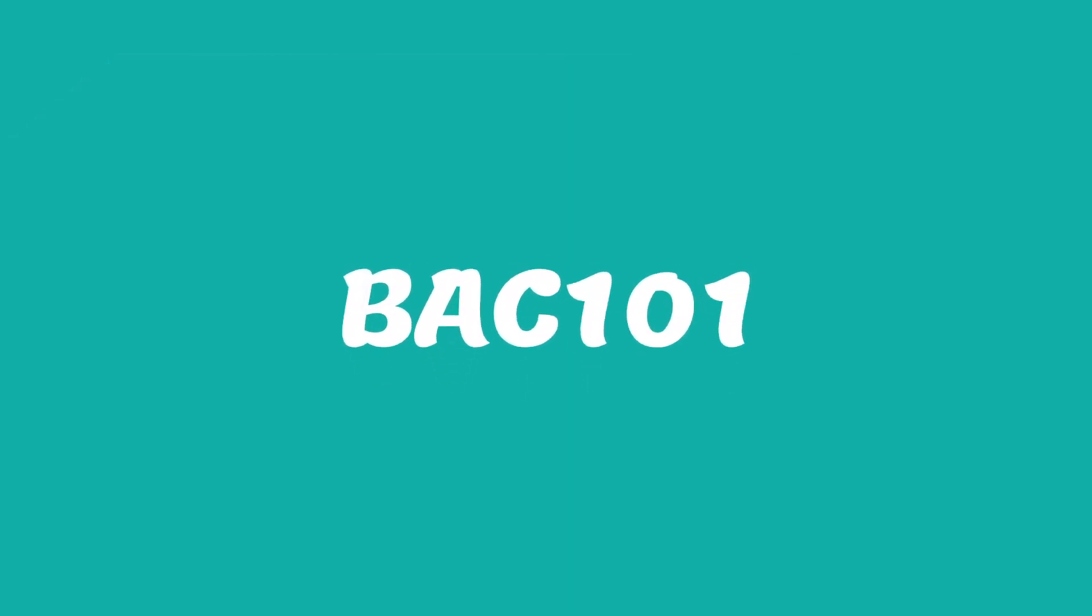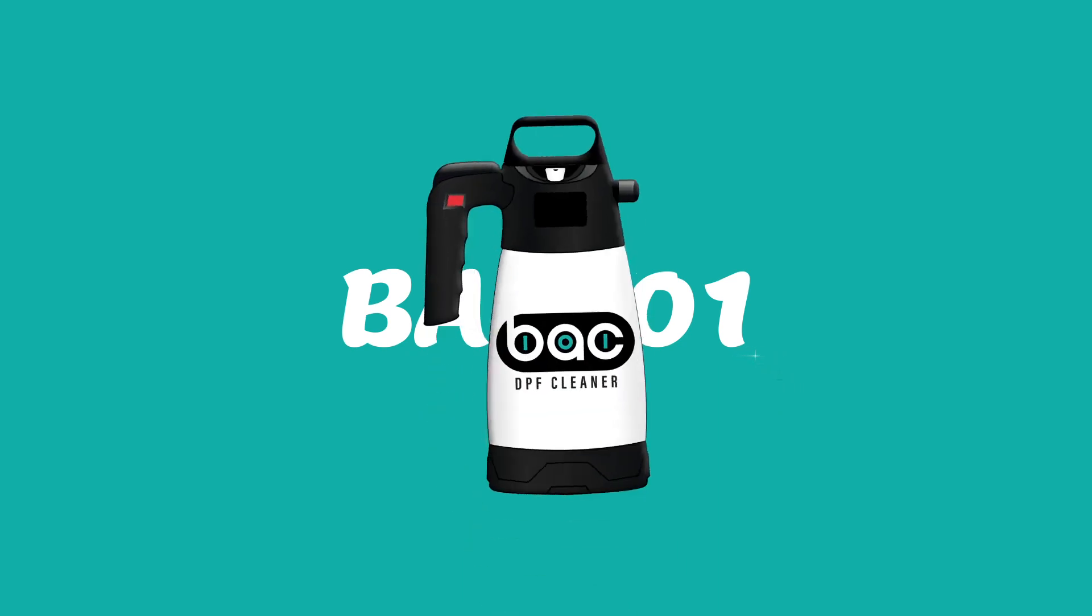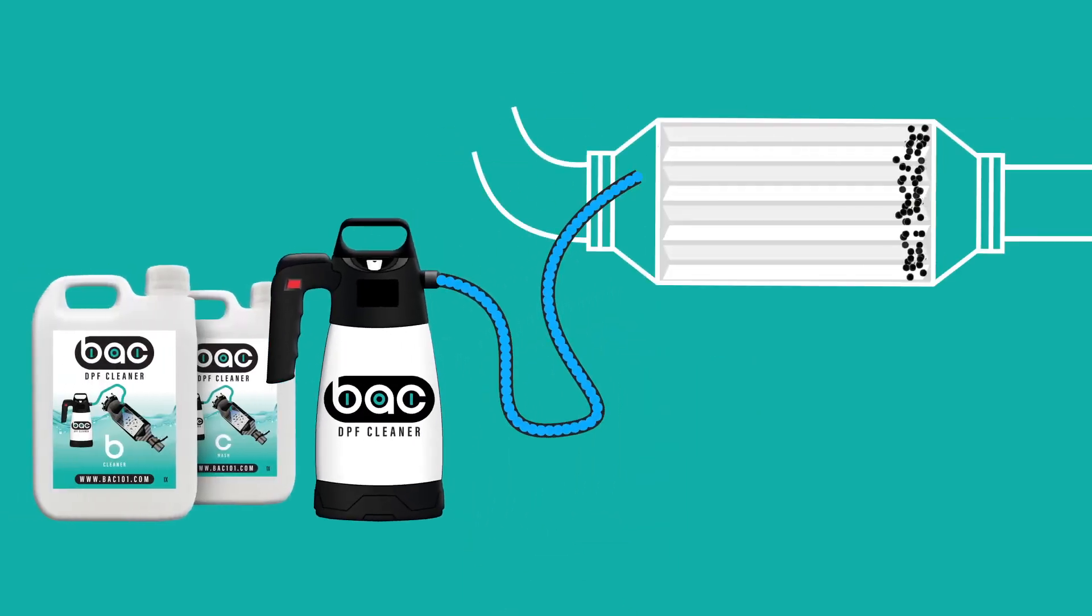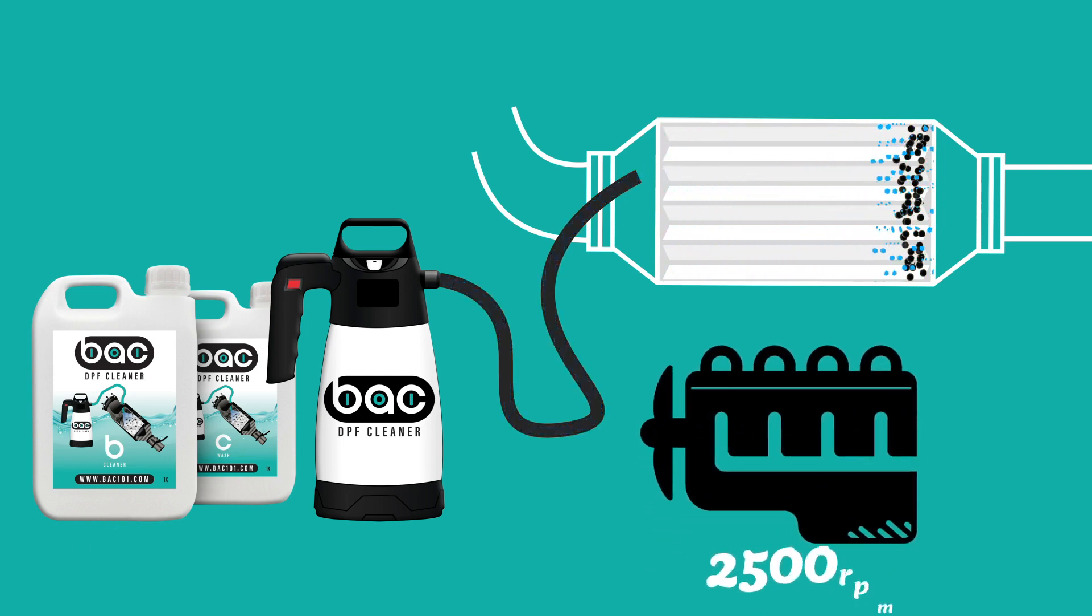Using BAC 101 is an easy task thanks to our patented spray pump that connects to the vehicle's DPF. Simply spray liquid B with the engine running at 2,500 rpm.